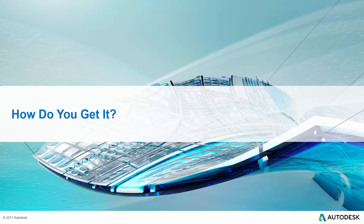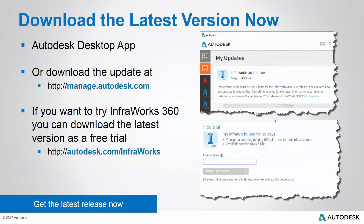Now that you've seen all these exciting new features in this latest update to InfraWorks 360, how do you get your hands on it? First, check your Autodesk desktop app for an InfraWorks 360 update, or go directly to manage.autodesk.com, log into your account, and check for the download there. And if you're not currently an InfraWorks 360 customer, you can try it out by going to the trial page at autodesk.com/InfraWorks. Be sure to get the latest release so you can take advantage of these new features.